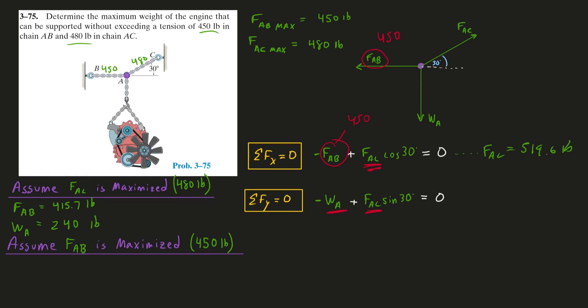So right now we know that this is not going to happen. We know that it's impossible to let force AB operate at its maximum because it will result in force AC breaking. Force AC would have to be operating at 519, and we know that force AC is only able to hold a maximum of 480 pounds.